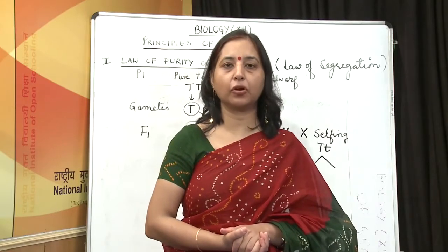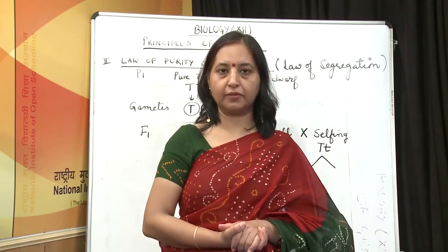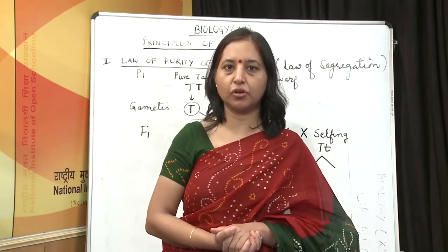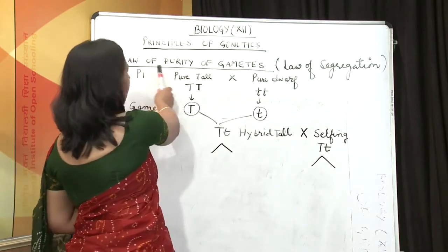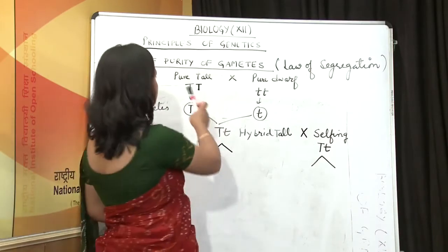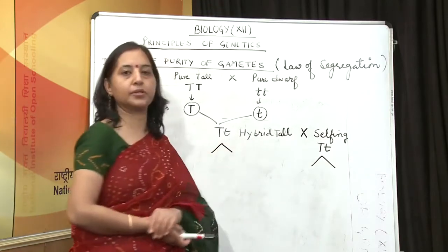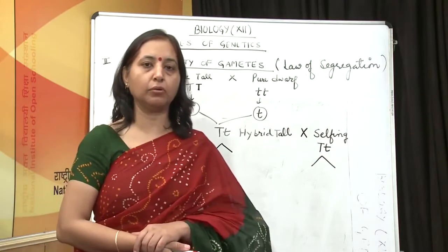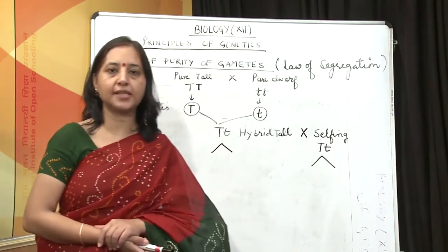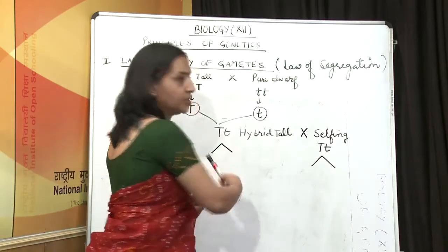Hello friends. Last time we talked about the three laws of inheritance given by Gregor Johann Mendel. The first law was the law of dominance. Today we are going to talk about the rest of the laws postulated by Mendel. The second law of inheritance is the law of purity of gametes, also called the law of segregation. When a pure tall parent is crossed with a pure dwarf plant, in the first generation we get 100% tall plants. This is what the law of dominance is about — out of two traits, only one is able to exhibit itself in the first generation, and that character is said to be dominating. So tallness is dominating over dwarfness.